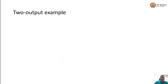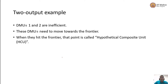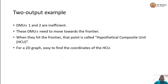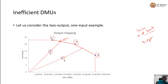DMUs 1 and 2 are inefficient. We need to move these DMUs to the frontier so that we can call them efficient. When they hit the frontier, we call that point the hypothetical composite unit, very similar to the approach taken in the previous session. From the two-dimensional graph, it is easy to find the coordinates of the HCU: draw a line from the origin, connect the point, and hit it on the frontier. This will be the HCU for DMU 1. Similarly, draw a line from the origin through point 2 and make it hit the frontier — this will be the HCU for DMU 2.